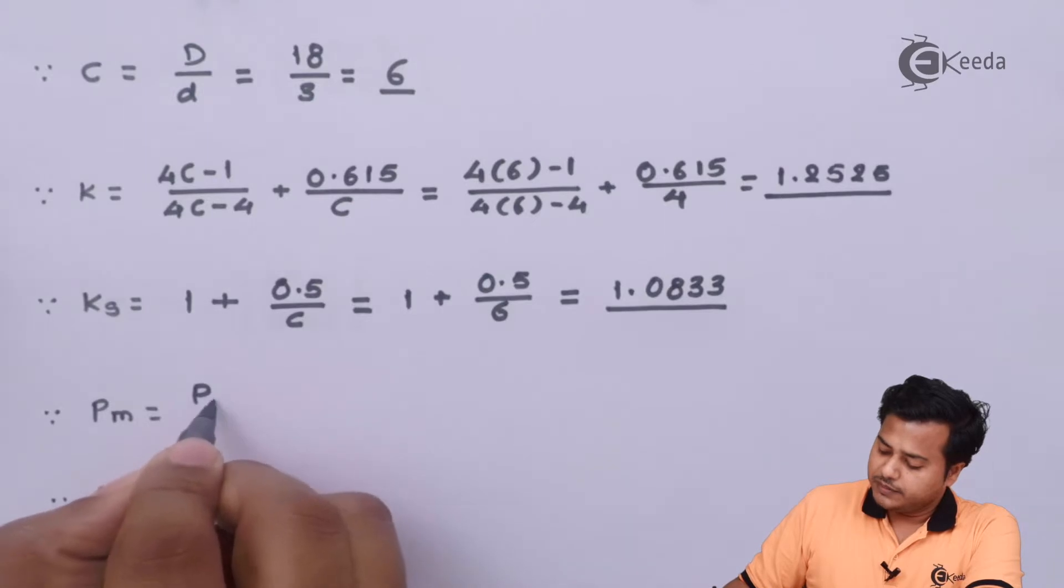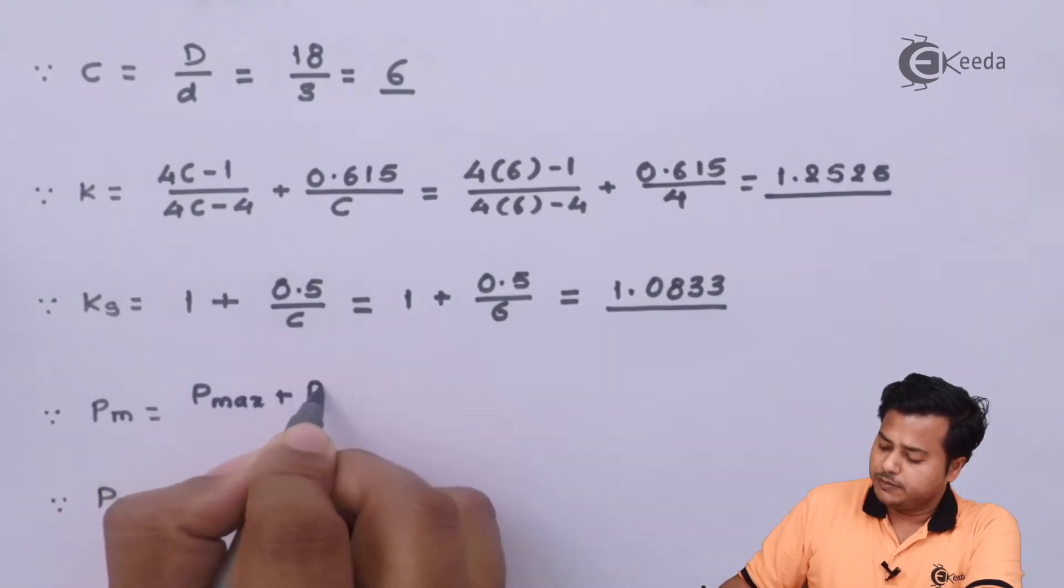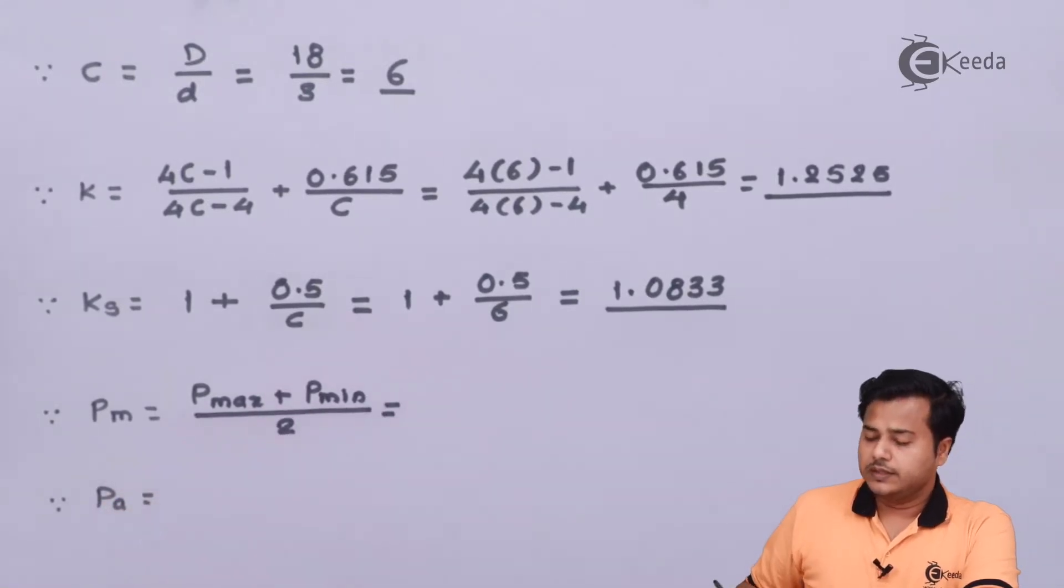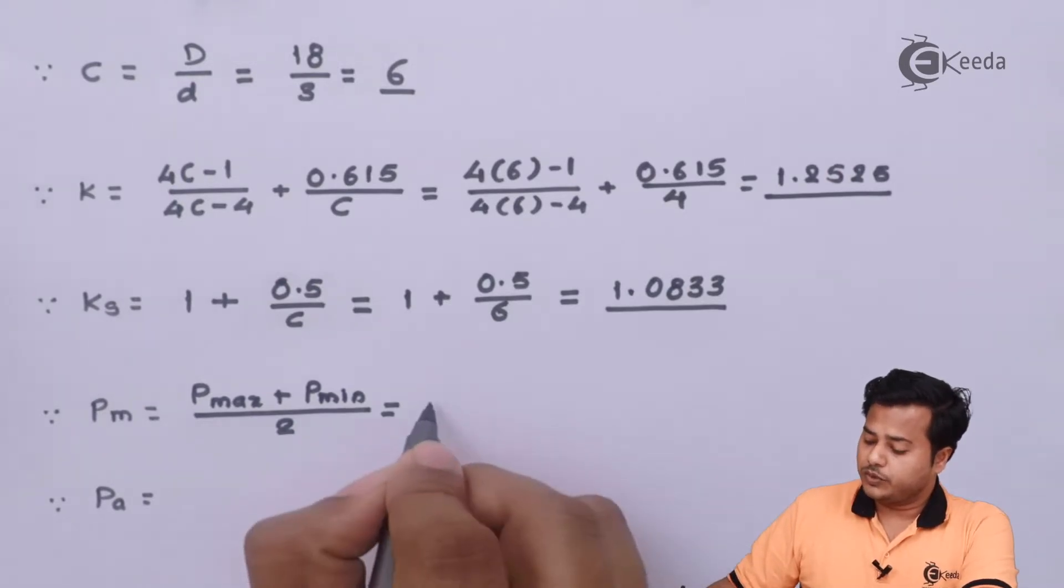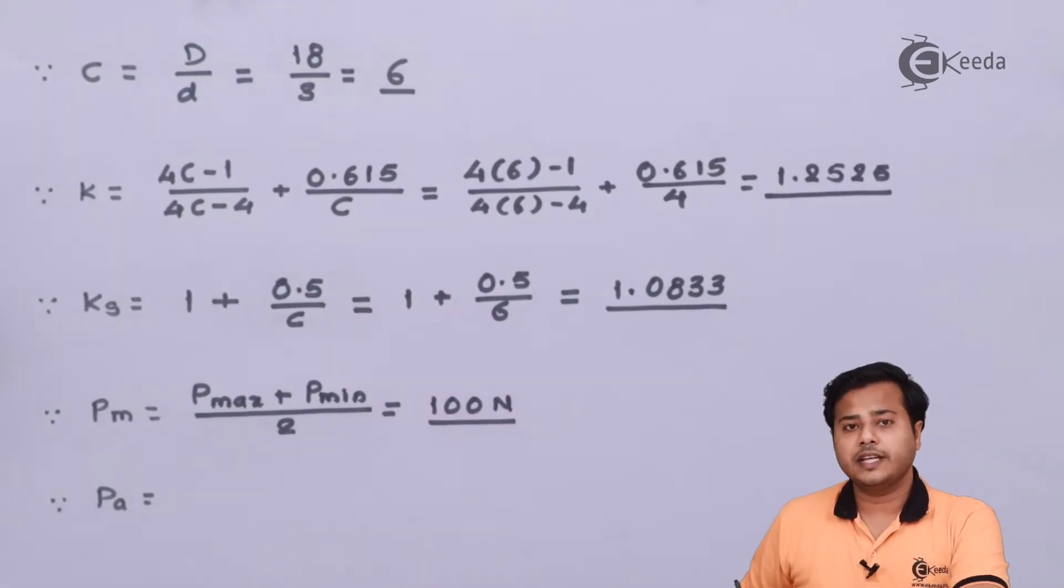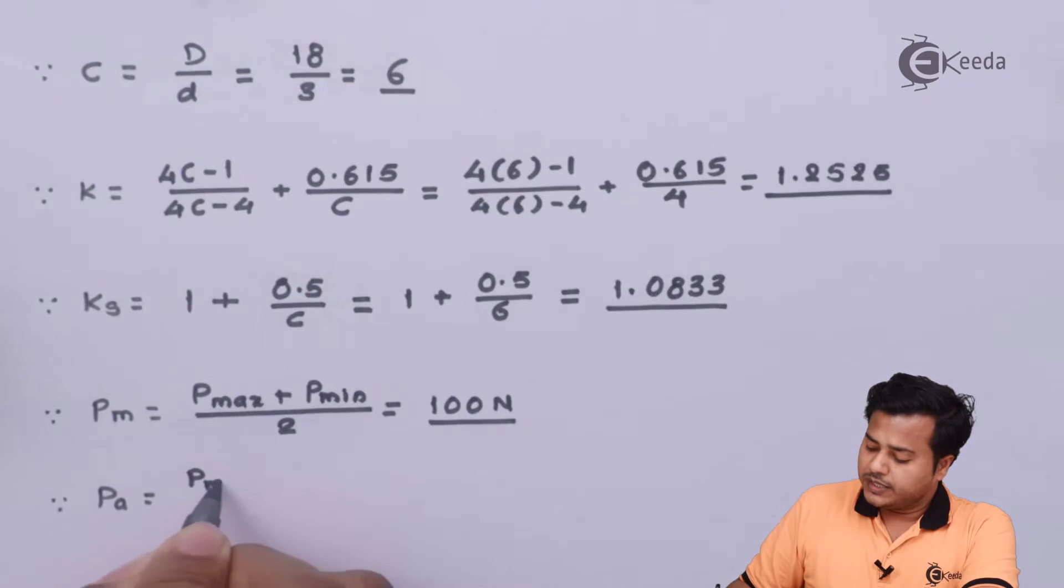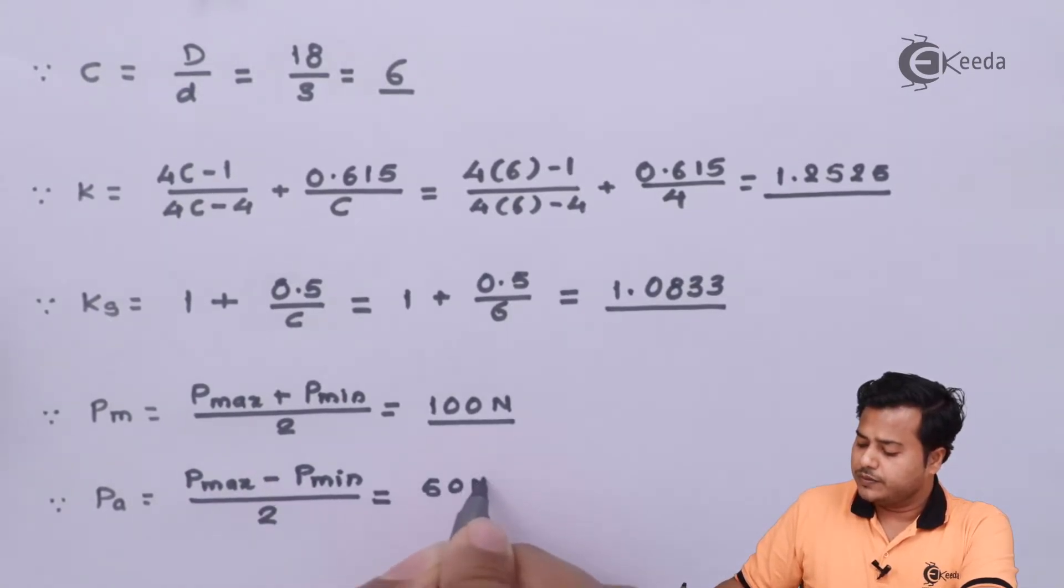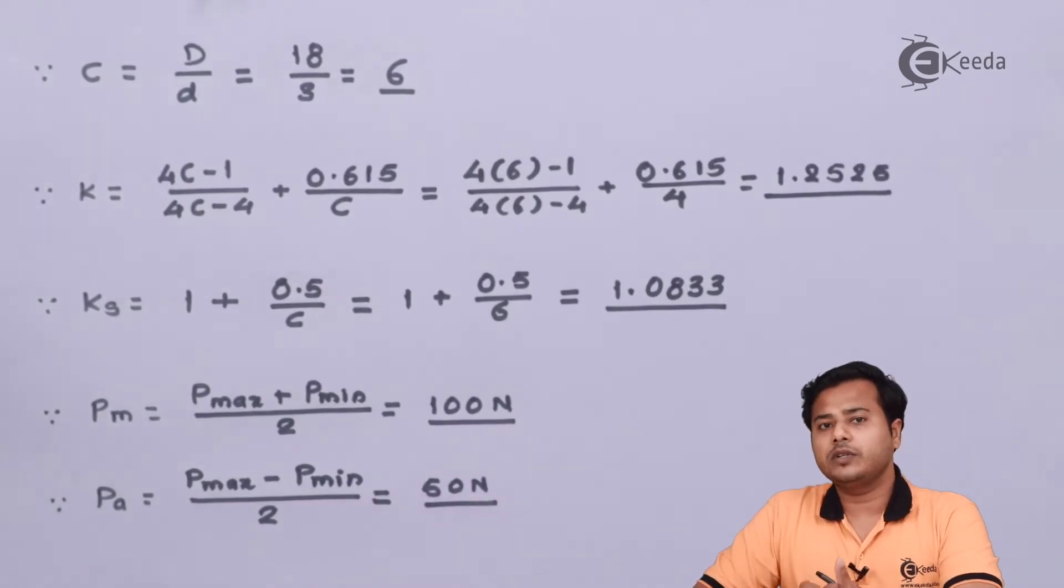The value comes out to be. The next thing is the mean value of P, we know that it is given by Pmax plus Pmin divided by 2. Using the values 50 and 150, the value comes out to be 100 N. The second thing is the amplitude load and we know that it is given by Pmax minus Pmin divided by 2. The value comes out to be 50 N. So these are the important factors that we are going to use in the subsequent steps.